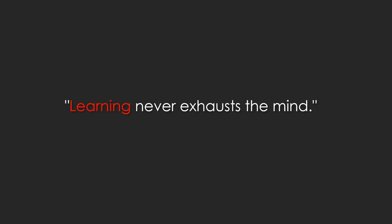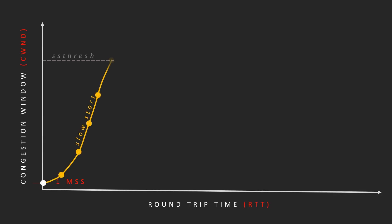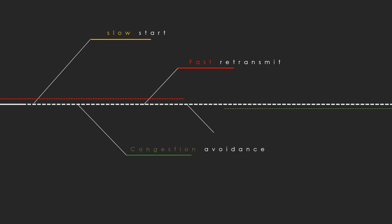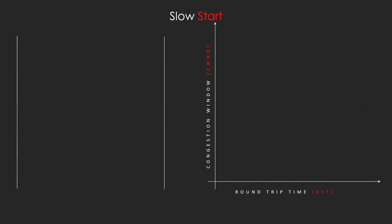TCP congestion control addresses the known TCP problem of overwhelming the network. TCP uses slow start to restart transmission after a relatively long period of time. In today's video we'll discuss TCP congestion control using slow start and congestion avoidance — how these algorithms must be used by a TCP sender to control the amount of outstanding data injected into the network, including the congestion window (cwnd) and the slow start threshold (ssthresh).